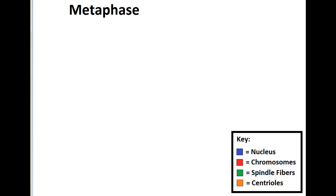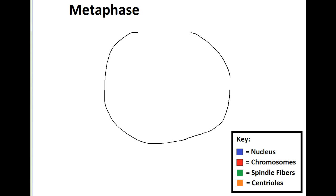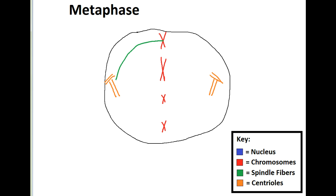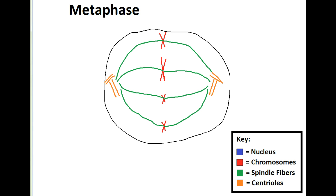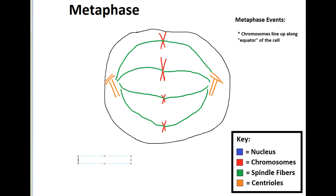Now we're going to talk about metaphase, which is the next phase of mitosis. Metaphase is probably the easiest one in the entire process to recognize, because you can see that the chromosomes are lined up right along the middle or equator of the cell. The centrioles are producing spindle fibers, and they are all connecting right at the very middle of the chromosome — that is called the centromere. The main event of metaphase: chromosomes line up along the equator because they're going to be divided in half, with spindle fibers attached at the centromere.